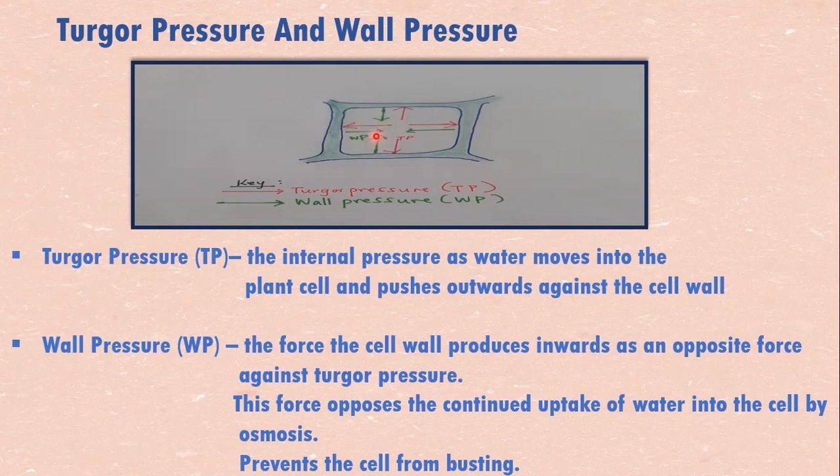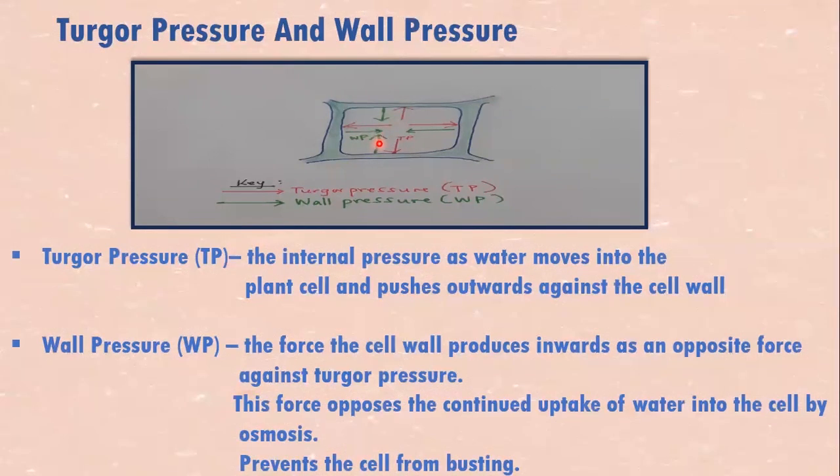Turgor pressure continues as well as wall pressure continuing, and wall pressure makes sure that the turgor pressure does not exceed what the cell can take. The wall pressure prevents the cell from bursting.